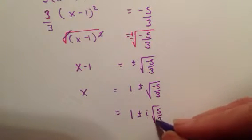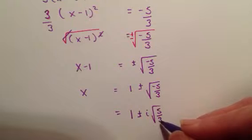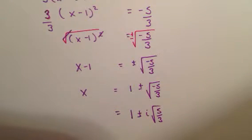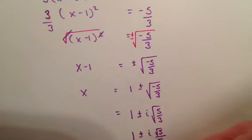Now, if you recall, we don't want to leave square roots in the denominator. This 3 is under the square root so we want to rationalize that. So I'm going to have 1 plus or minus i. And if you remember, for square roots, it's really square root of 5 over the square root of 3. So I can go ahead and multiply that by the square root of 3 over the square root of 3.